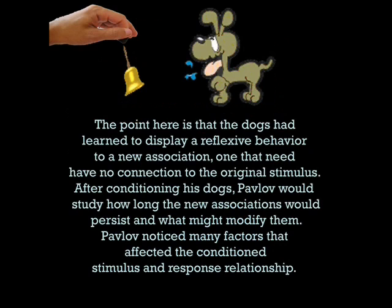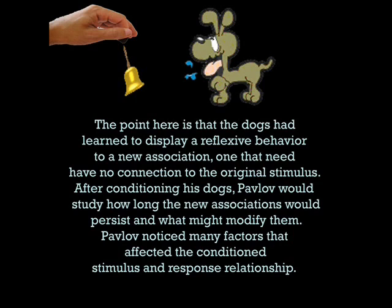The point here is that the dogs had learned to display a reflexive behavior to a new association, one that need have no connection to the original stimulus. After conditioning his dogs, Pavlov would study how long the new associations would persist and what might modify them.